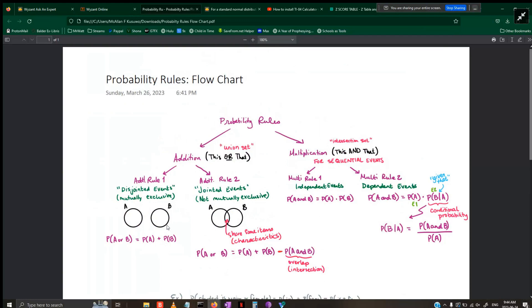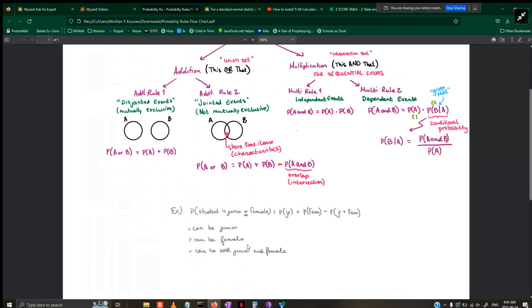For addition rule two, it involves jointed events, meaning the two or however many events are not mutually exclusive—they're sharing something, sharing items or characteristics. That's how you know to use this formula, which is the first rule but then you're subtracting the overlap, which we call the intersection.